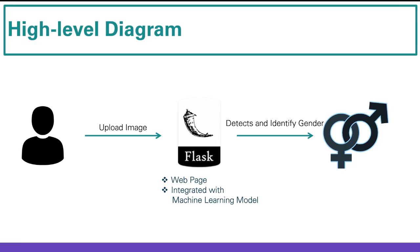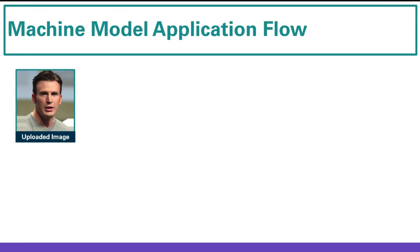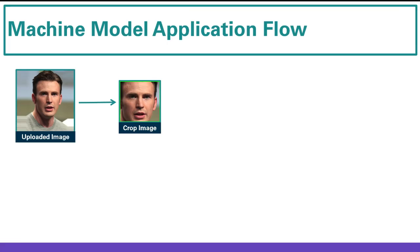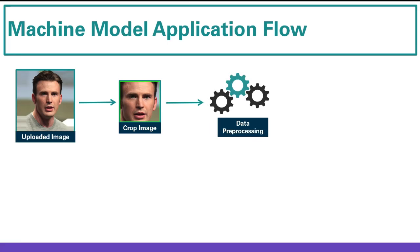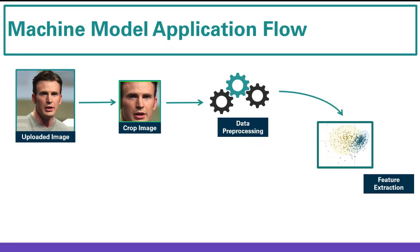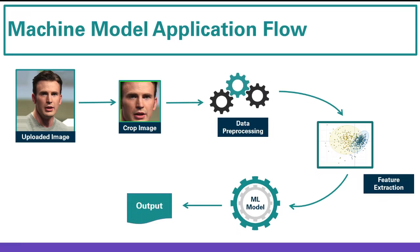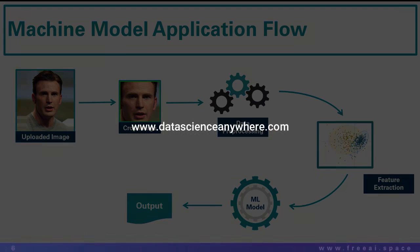Now let's look into the machine learning flow. As soon as the user uploads the image, step one is to detect the face and crop it. The cropped image goes through some data pre-processing steps, then we extract some features. Those features are passed to the ML model, which returns the output — whether the person is male or female. We'll see you in the next lecture for more on machine learning. Thank you very much.